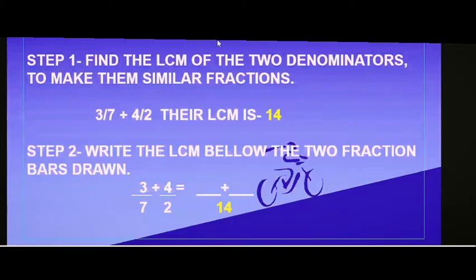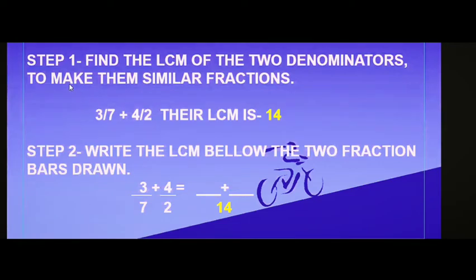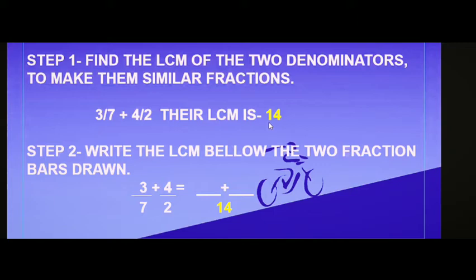For adding dissimilar fractions, the first step is to find the LCM, or least common multiple, of the two denominators to make them similar fractions so we can add them. For 3 sevenths and 4 halves, the denominators are 7 and 2. Their LCM is 14.